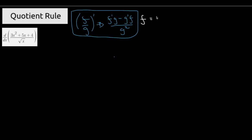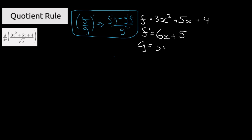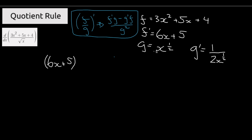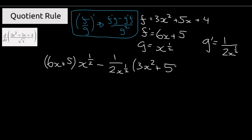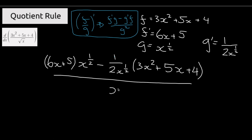For the final problem, f is equal to 3x squared plus 5x plus 4, f prime is equal to 6x plus 5, g is equal to x to the power of 1/2, and g prime is equal to (1/2)x to the power of negative 1/2. Using the quotient rule: f prime (6x plus 5) multiplied by x to the power of 1/2, minus g prime (1/2)x to the power of negative 1/2 multiplied by (3x squared plus 5x plus 4), all divided by g squared which is x to the power of 1/2 squared.